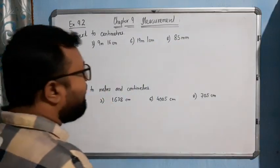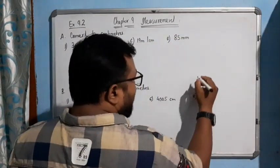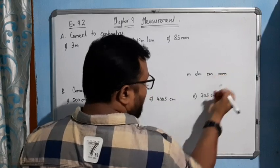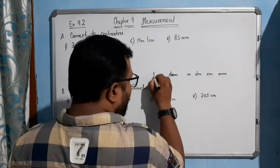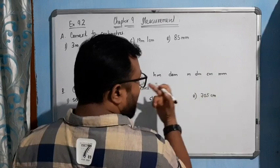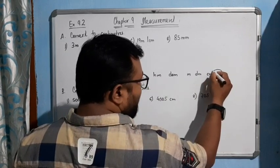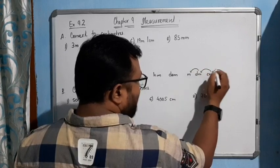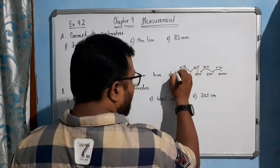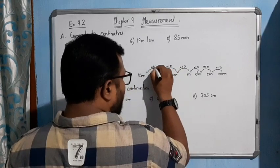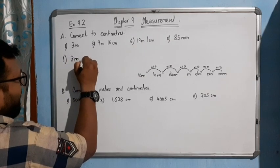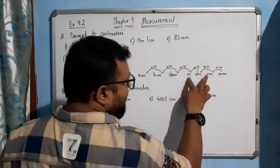Remember the metric scale: kilometer, hectometer, decameter, meter, decimeter, centimeter, millimeter. The difference between each unit is 10. So 10 millimeters gives you 1 centimeter, and you multiply by 10 at each step going down, or divide by 10 going up.